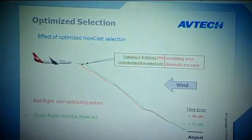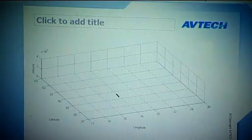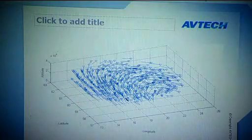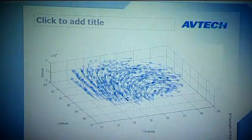My name is Sardar Akhalinli and I'm going to talk about winds. In order to achieve the full potential of flying green approaches or continuous descent approaches, you need to know which winds you're going to fly through during the descent. The Aventus nowcast system uplinks a tailored nowcast which enables the FMS to pinpoint the optimum point of when to start descending from cruise, also known as top of descent.